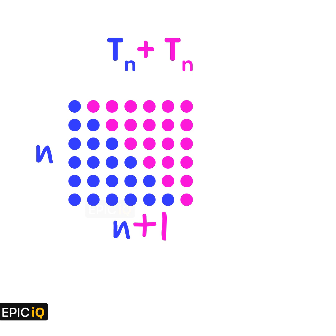So, the number of points in this rectangle will be n into n plus 1. Since this n into n plus 1 rectangle has twice the number of points than the triangular number, the nth triangular number will be n into n plus 1 divided by 2.